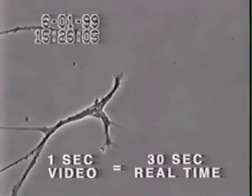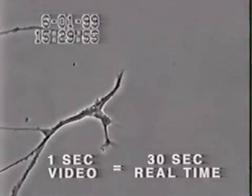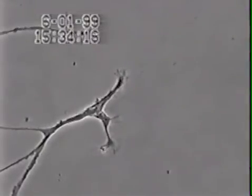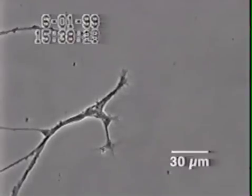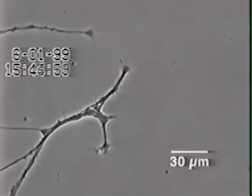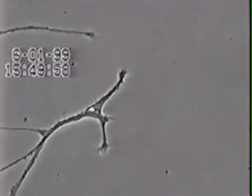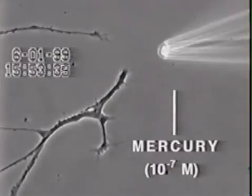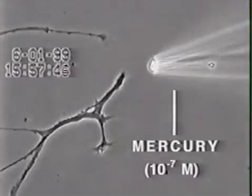In this experiment, neurons also isolated from snail brain tissue were grown in culture for several days, after which very low concentrations of mercury were added to the culture medium for 20 minutes. Over the next 30 minutes, the neurite membrane underwent rapid degeneration.